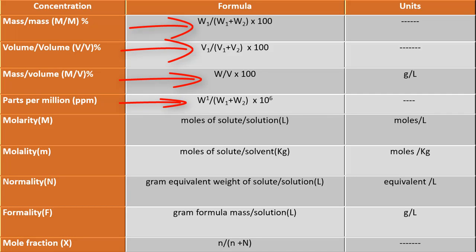Fourth is parts per million — it is the mass of solute present in total mass of solution multiplied by 10 to the power 6, and has no unit. Fifth is molarity — it is the moles of solute present in one litre of solution, with unit moles per litre. The molarity of a solution is affected by temperature. Sixth is molality — it is the moles of solute present in one kg of solvent, with unit moles per kilogram. Molality of a solution is not affected by temperature. Seventh is normality — it is gram equivalent weight of solute present in one litre of solution, with unit gram per litre. Normality of a solution is affected by temperature.